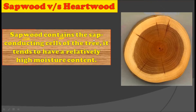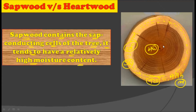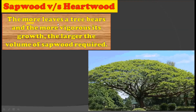The sapwood contains the sap-conducting cells of the tree and tends to have relatively high moisture content. Because the sapwood conducts sap toward the leaves, it always remains in contact with water, and due to this it always has a high amount of moisture. Comparatively, sapwood has high moisture content as compared to hardwood, because hardwood does not conduct any water and will always have low moisture.